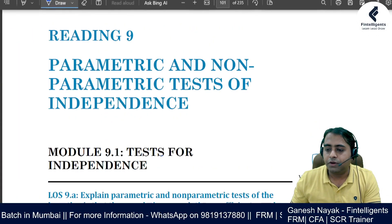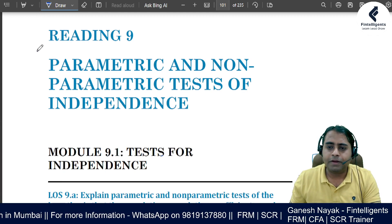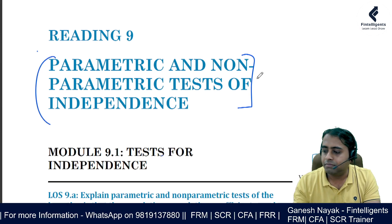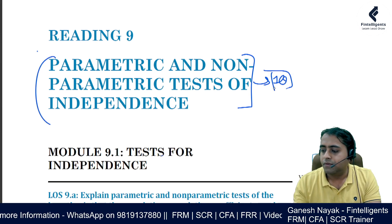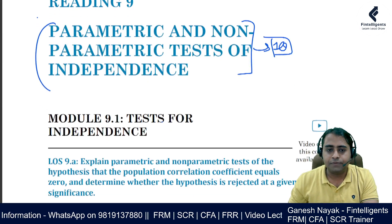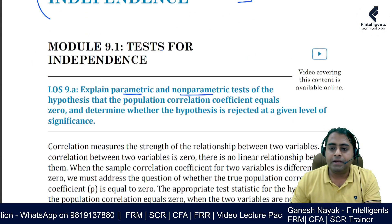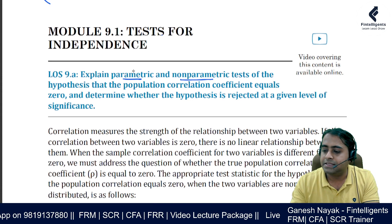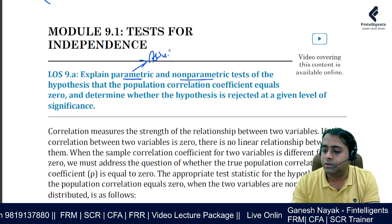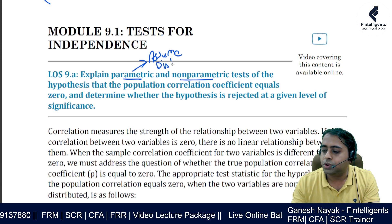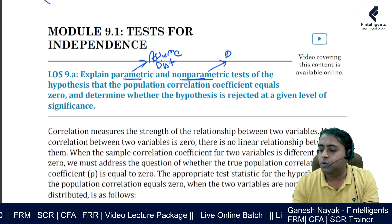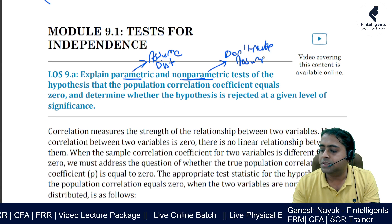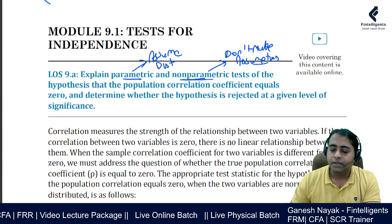Hello, thank you for joining in. We are going to be talking about this chapter: parametric and non-parametric tests of independence. This chapter is small and not very heavily tested — you might get one question from this section on the exam. Parametric makes an assumption about the distribution of the data, whereas non-parametric does not make any assumption; they take whatever the actual distribution of the data is.